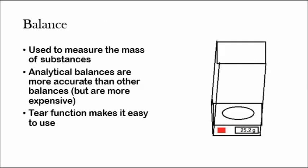A balance, these are used to measure the mass of substances. Analytical balances are more accurate than other balances, but they're more expensive. An analytical balance is typically the type of balance you see with the little door, that's completely sealed off. They're very accurate, but they're also very expensive.